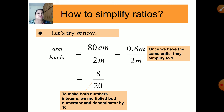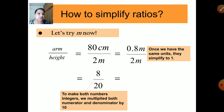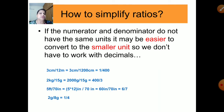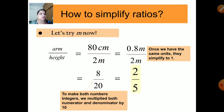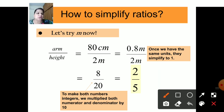Alternatively, converting to meters: 80 cm ÷ 100 = 0.8 m. The ratio is 0.8/2. To remove the decimal, multiply both numerator and denominator by 10: that gives 8/20. Dividing by the HCF of 4 gives 2/5. The answer is the same — the ratio is 2:5. Remember to write the final answer in ratio form.